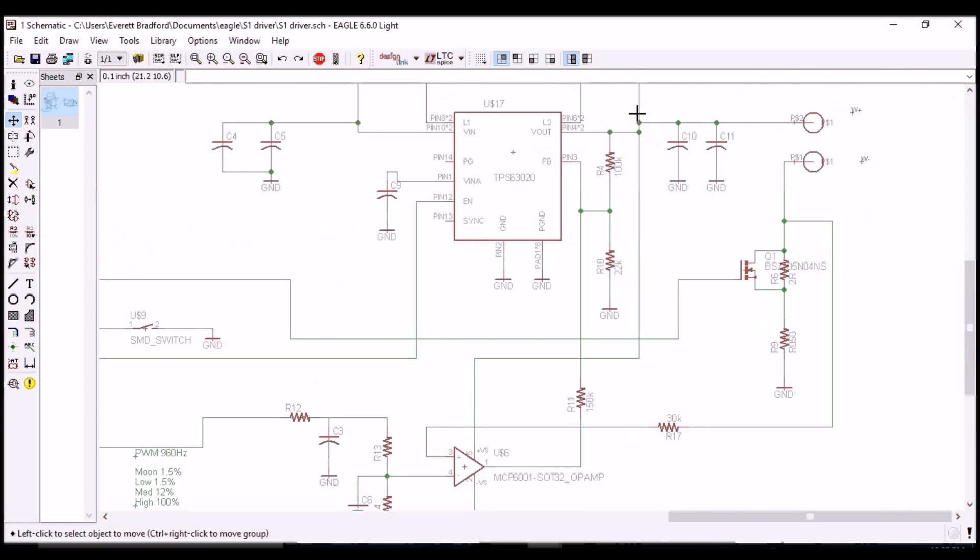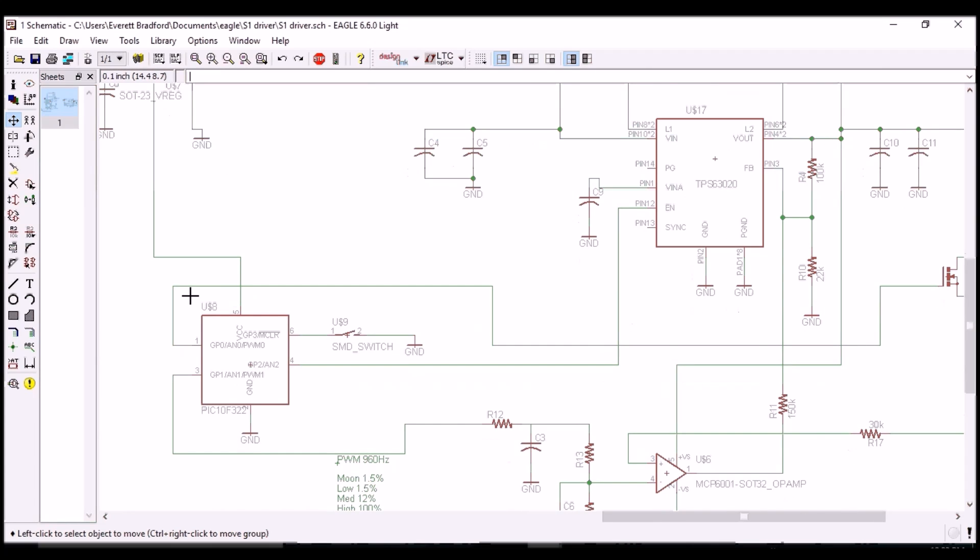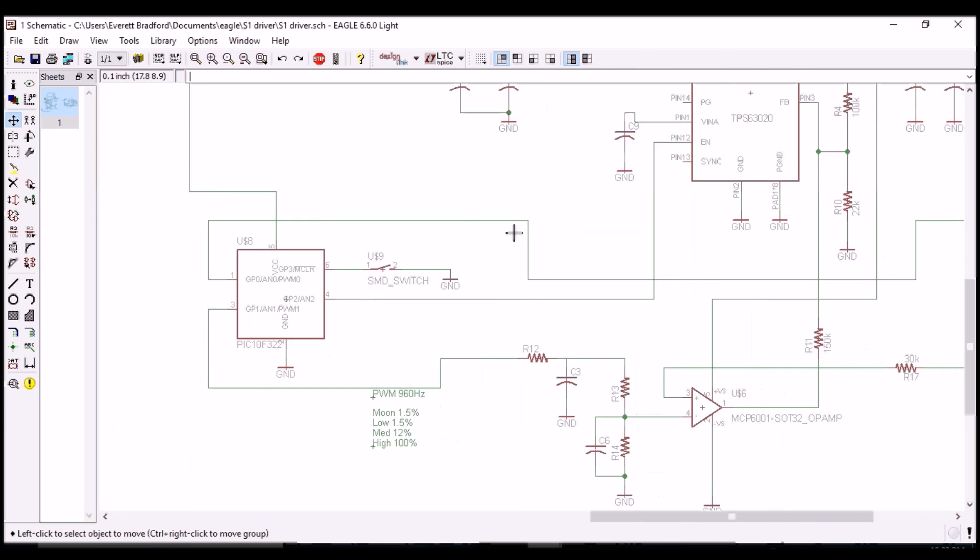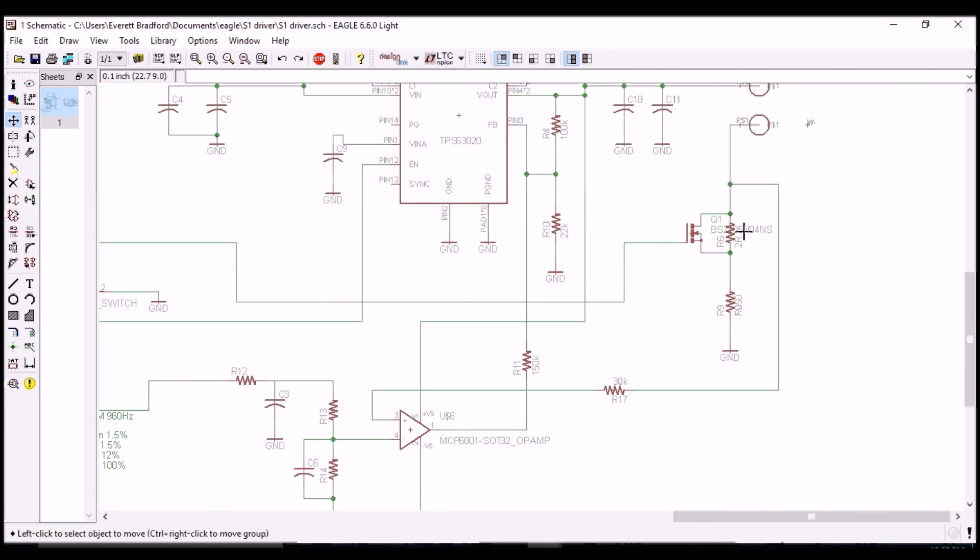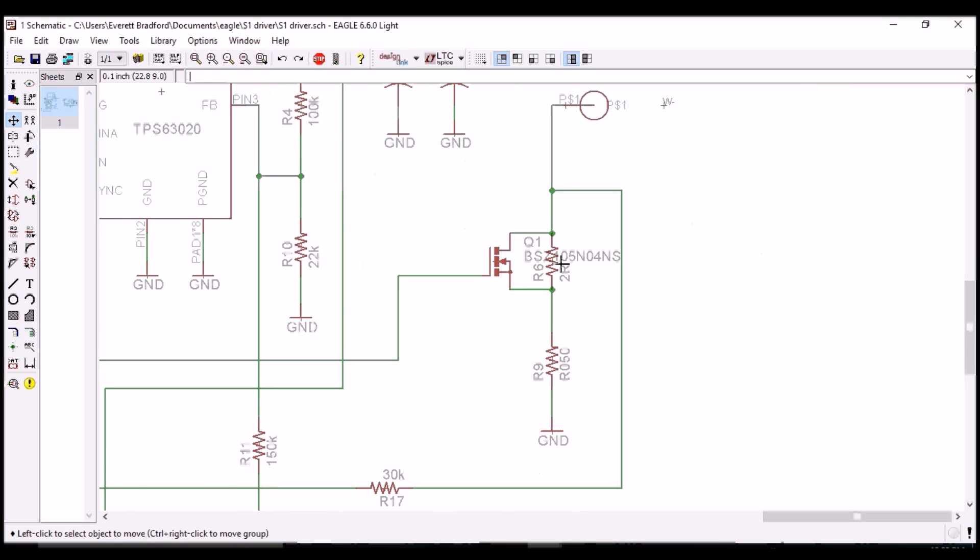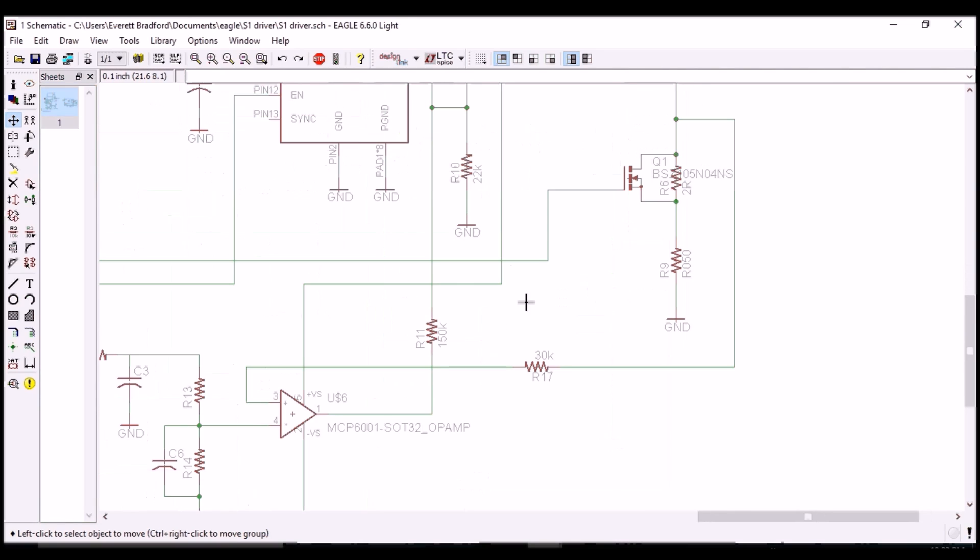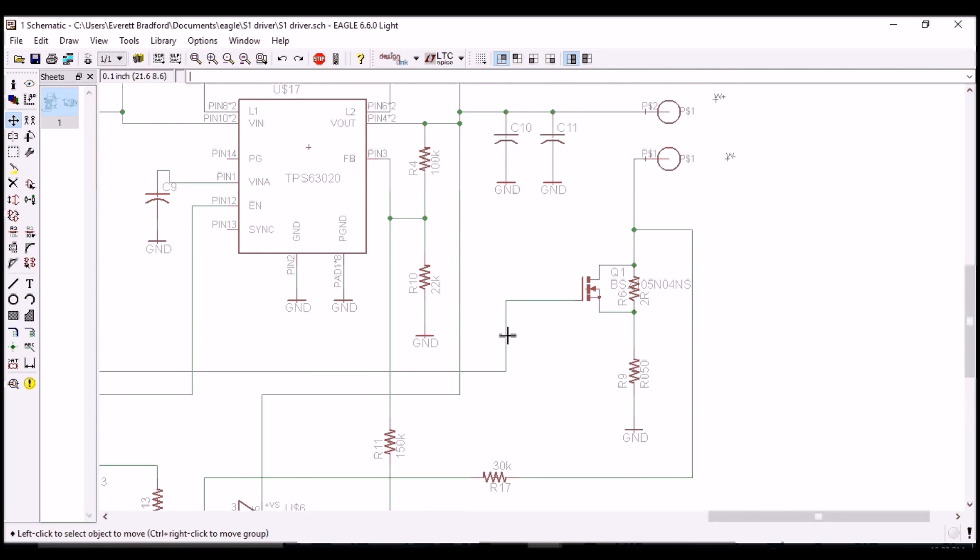The op amp is powered by the output of the regulator, which is a good way to do it because then this will consume no current when the light is turned off. The microcontroller turns this enable pin on or off to shut this down when the light is off. The microcontroller also switches this FET on and off, and what this does is it shunts out a 2 ohm resistor that's in series with the primary 50 milliohm current sense resistor. They keep this FET off in moonlight mode and on in all the others, essentially switching between two different current ranges.